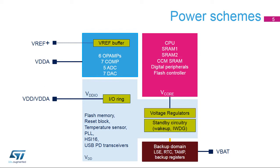VDD supplies voltage regulators, which provide the V-Core supply. V-Core supplies most of the digital peripherals, SRAMs, and flash memory controller. VDD voltage supplies the analog peripherals. The VREF plus pin provides the reference voltage to the analog-to-digital and digital-to-analog converters. It is also the output of the internal voltage reference buffer when enabled. A backup battery can be connected to the VBAT pin to supply the backup domain.